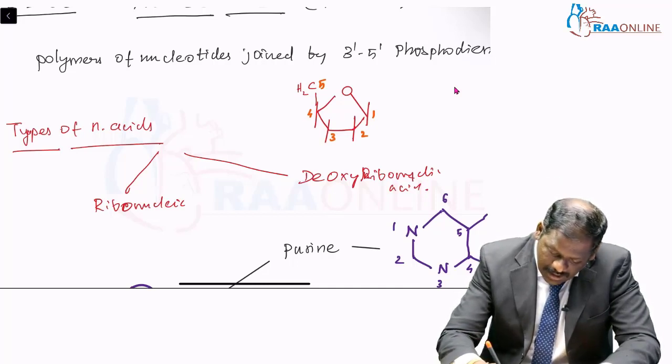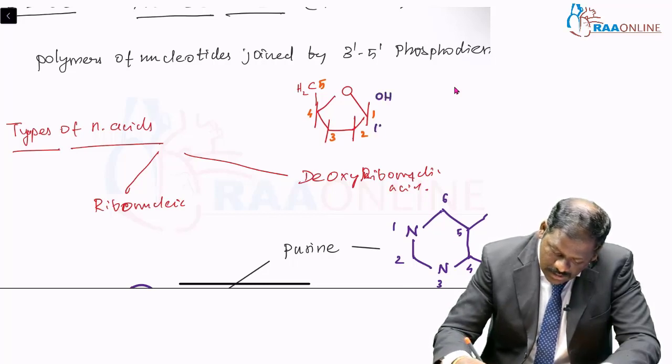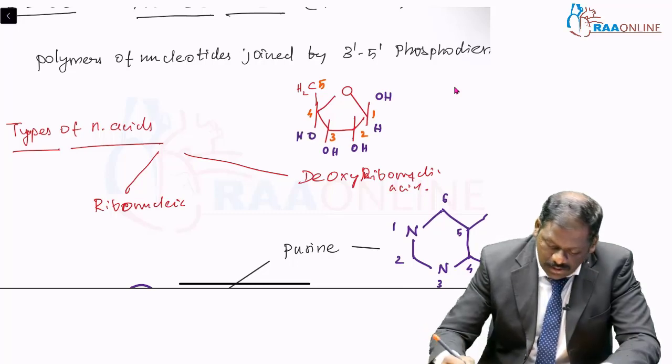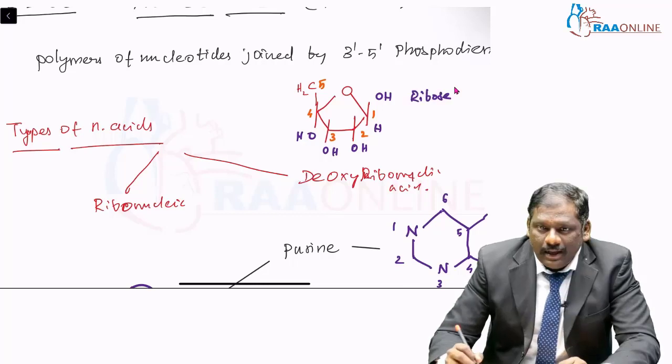Here, these areas will be having OH groups in it. OH, H, OH, OH, OH. Are you clear with this? So this is a ribosugar.